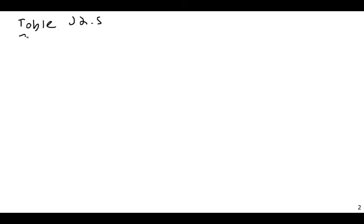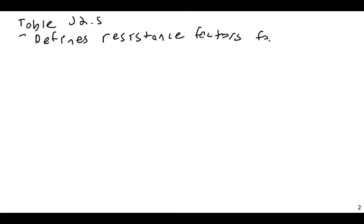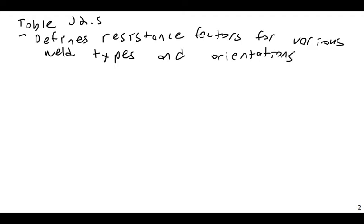Table J2.5 defines resistance factors for various weld types and orientations. For example, at the top it lists complete joint penetration (CJP) groove welds. The first line says tension normal to the weld axis — the strength of the joint is controlled by the base metal, and matching filler metal shall be used for T and corner joints with backing left in place. See Section J2.6.